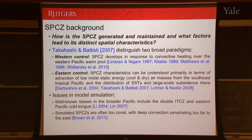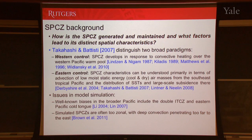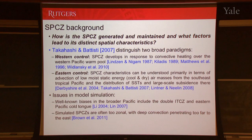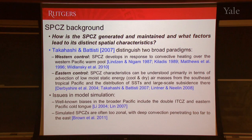In terms of some background about the SPCZ: from a fundamental point of view, we're interested in how the SPCZ is generated and maintained — why is it there? A question that intrigued me initially is why it has the sort of distinct spatial characteristics that we see. In contrast to the ITCZ in the Pacific, the SPCZ has this characteristic diagonal tilt. We also see analogous features in the Atlantic — the SACZ — and a smaller SICZ in the Indian Ocean, with dynamical similarities but also important differences.